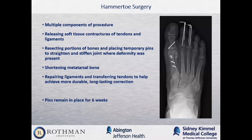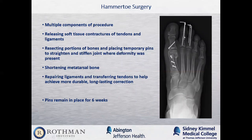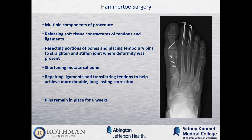When addressing hammer toes surgically, it involves releasing soft tissue structures — tendons and ligaments — holding the toe contracted. Usually a portion of bone is removed from the proximal interphalangeal joint to straighten it, and pins are placed across the joint for approximately four to six weeks. In cases of bad deformity, the metatarsal bone may be shortened to allow the toe to fall back into place, and ligament repairs and tendon transfers are done to balance the soft tissues and maintain alignment.